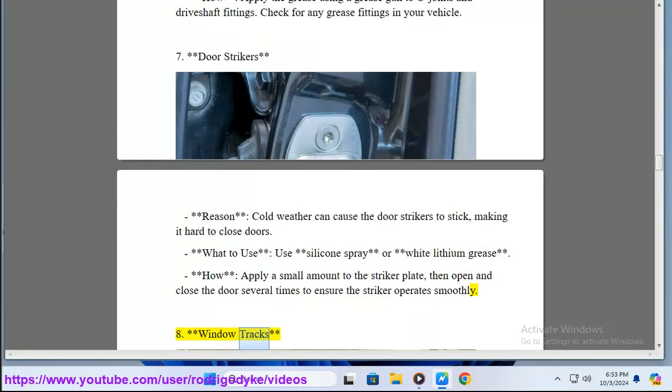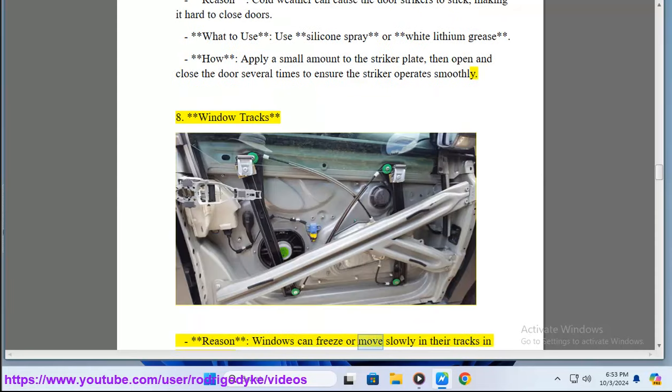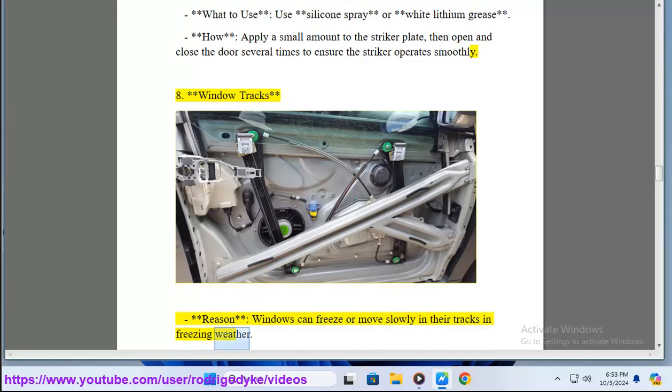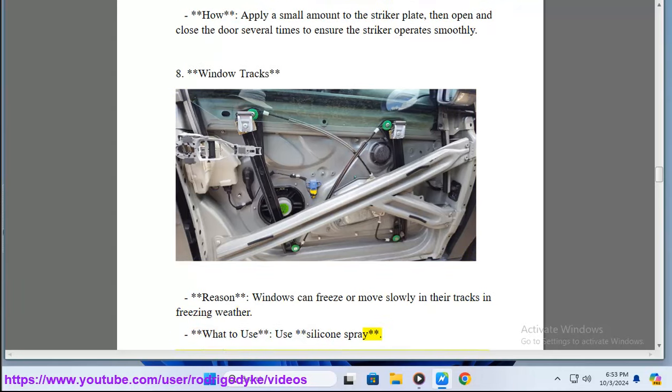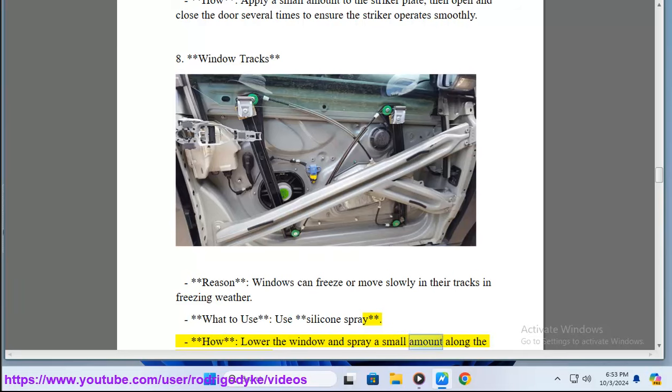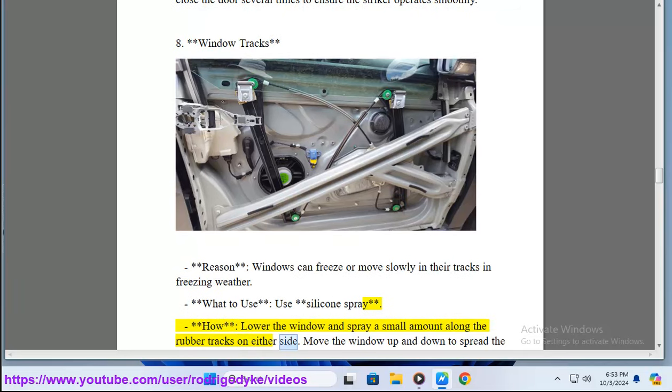8. Window Tracks. Windows can freeze or move slowly in their tracks in freezing weather. What to use? Use silicone spray. How? Lower the window and spray a small amount along the rubber tracks on either side. Move the window up and down to spread the lubricant.